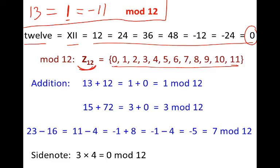13 is equivalent to 1, 12 is equivalent to 0, so 13 plus 12 is the same as 1 plus 0, which is 1 mod 12. I know that 15 is equivalent to 3, 72 is equivalent to 0, so instead of doing 15 plus 72, I would rather add 3 plus 0. In either case I will get 3 mod 12. Note that all these additions make sense on a 12 hour clock.